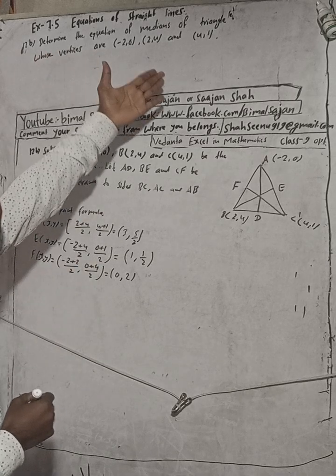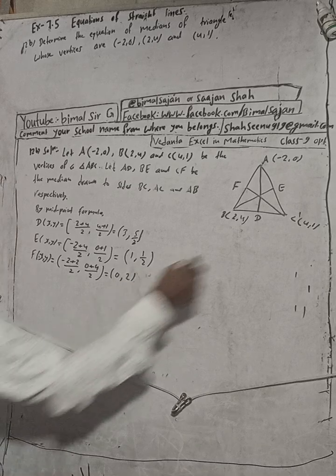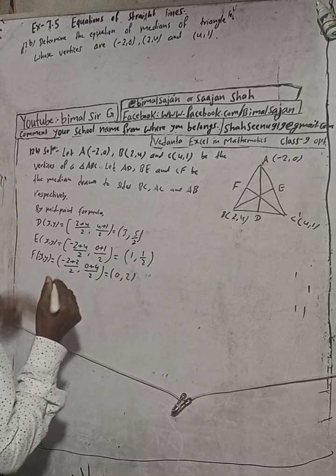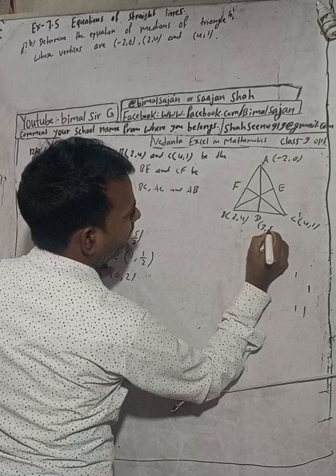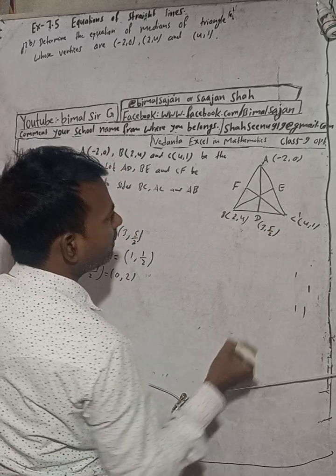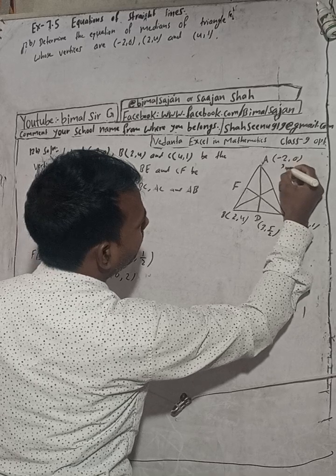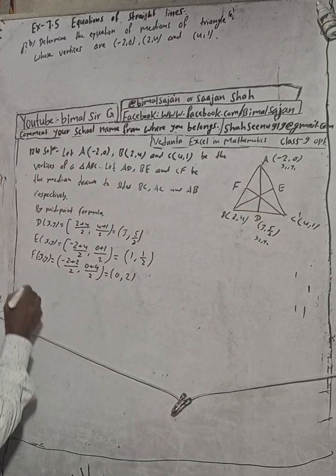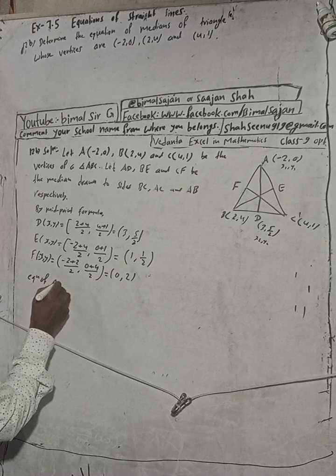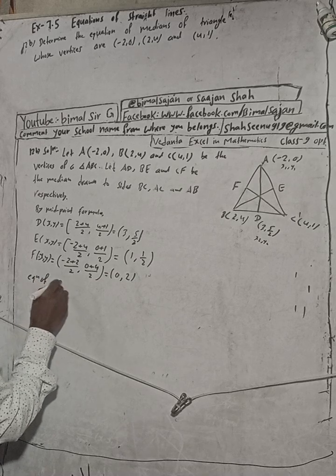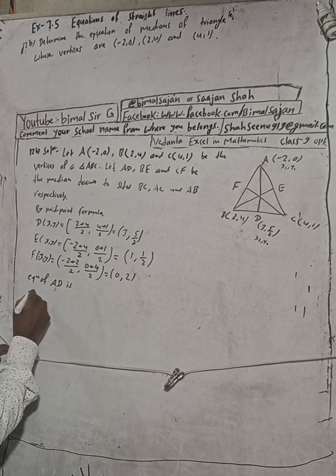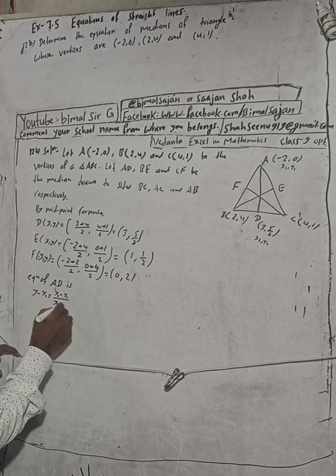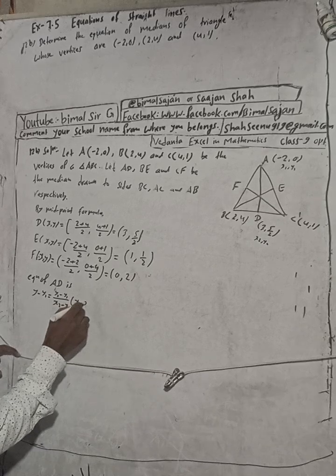The question asks us to determine the equation of the medians. We found the midpoints, so now we can find the median equations. For median AD: A = (-2, 0) is one point and D = (3, 5/2) is the other. Suppose this is X1, Y1 and this is X2, Y2. The equation of the median is: y - y1 = [(y2 - y1) / (x2 - x1)] × (x - x1). This is the formula.